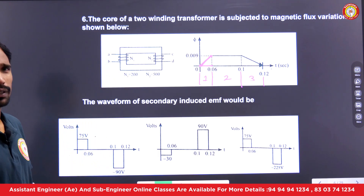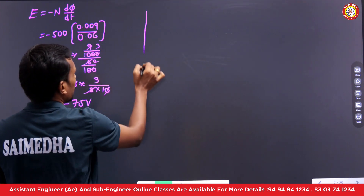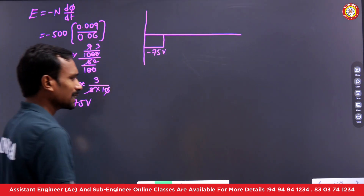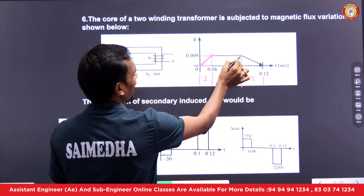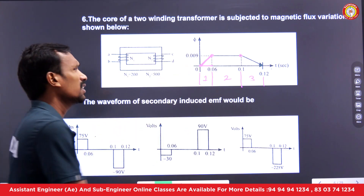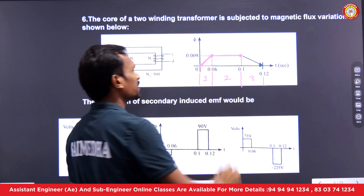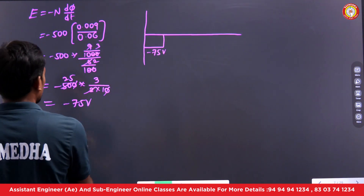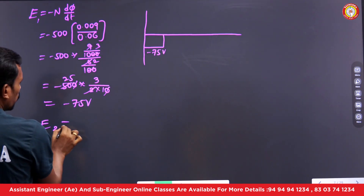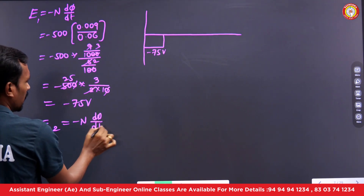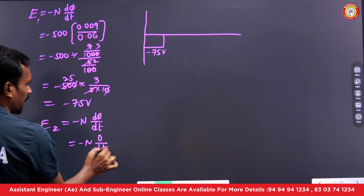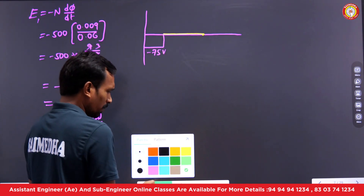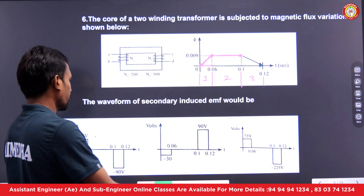In the first case, the induced EMF is −75 volts. In the second case, what is the change in flux? At both the start and end of this interval, there is no change in flux. If there is no change in flux, there is no induced EMF. E2 = −N × (dΦ/dt) = −N × (0/dt) = 0. So there is no EMF induced in the second case.